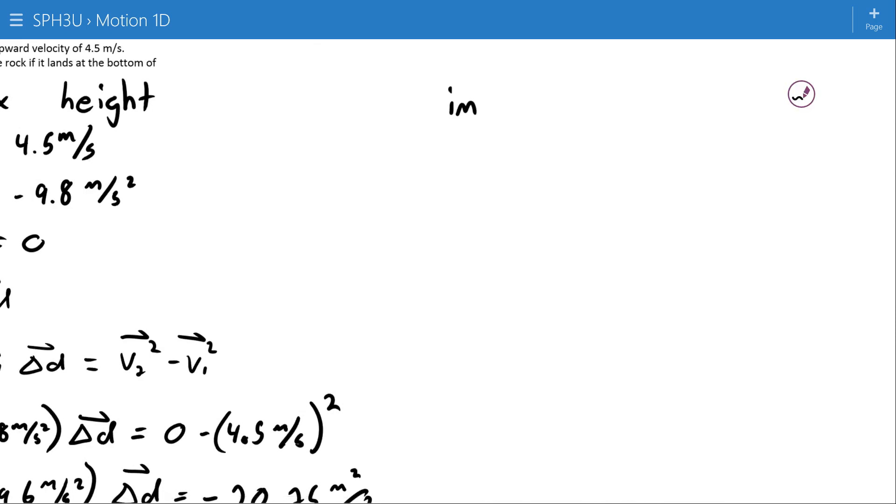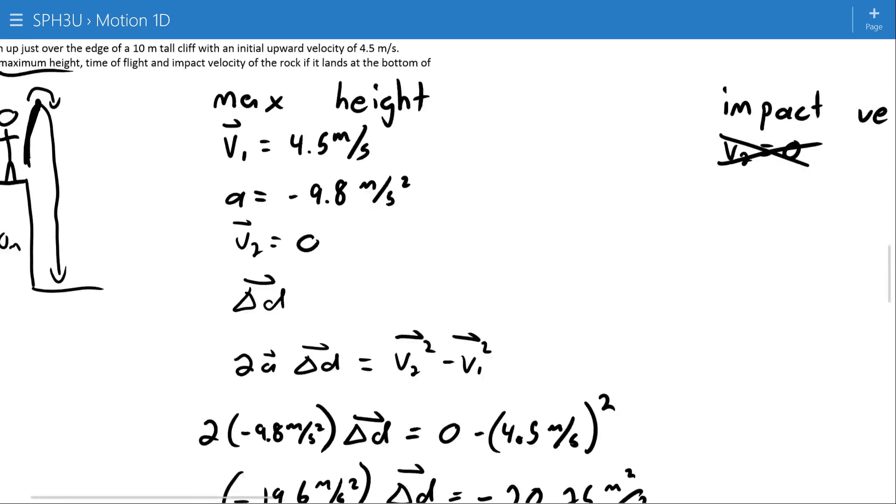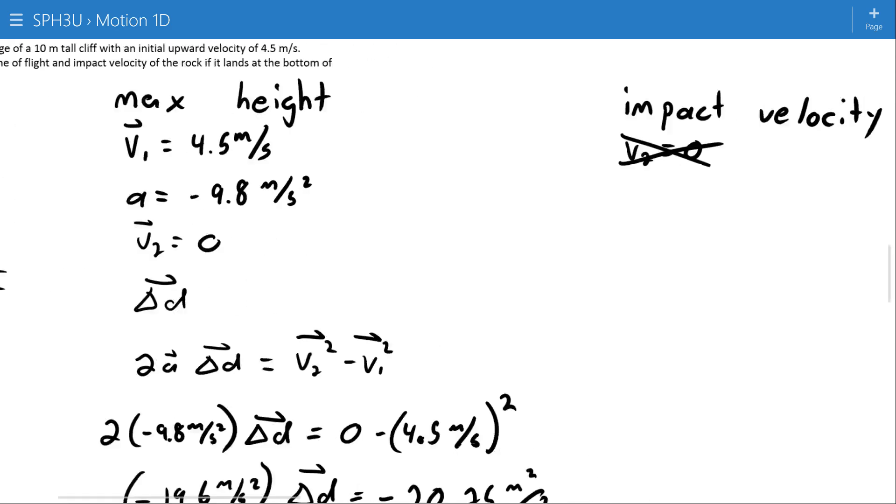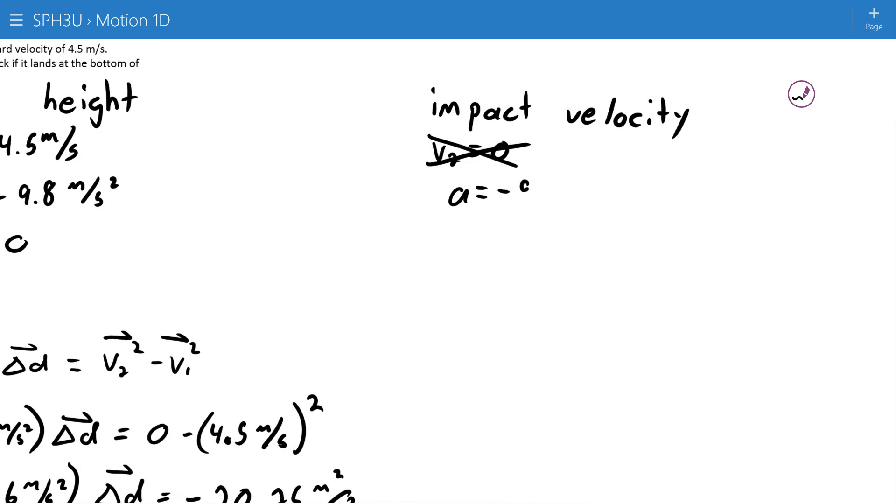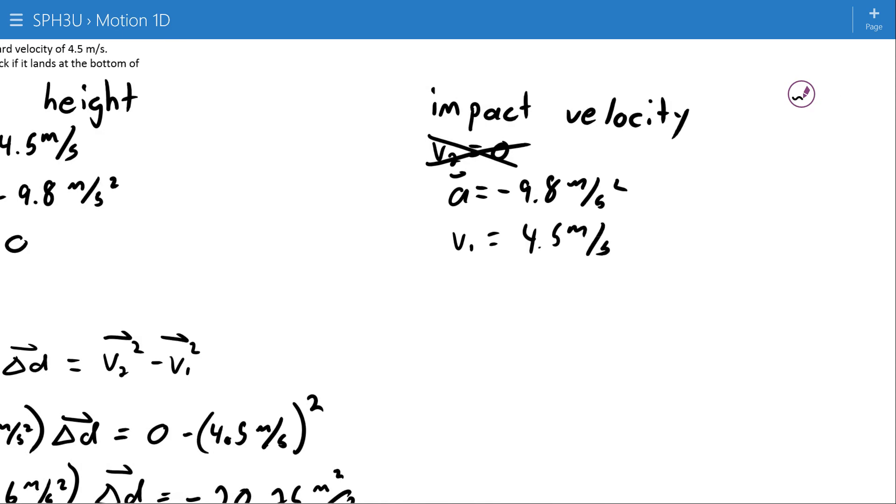Let's do impact velocity next. I can't use V2 equals zero for impact velocity because I'm gonna go up and come back down. When I used V2 as zero, that meant that I stopped there. I'm coming all the way down to here, so it's just not true anymore. So I can't use that. A equals negative 9.8 meters per second squared. I can obviously still use an initial velocity of 4.5 meters per second. So I got two. I need one more thing.